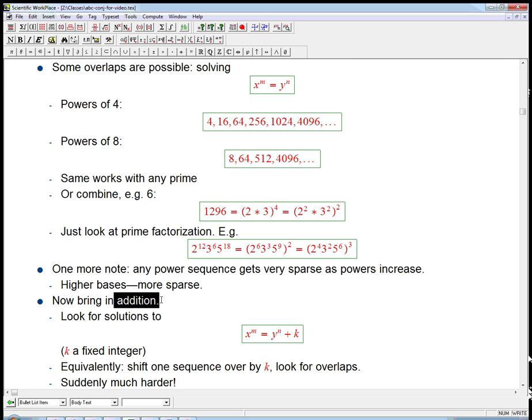Now we bring in addition. Any kind of interesting number theory is really combining multiplication and addition, and often combining powers, multiplication, and addition. So here's what we're going to do. We're going to look at solutions of the equation x to the m equals y to the n plus k. So k is just going to be a fixed integer, 1 or 2, or I'll show you an example of 24, and then we're going to look at solutions to this equation.